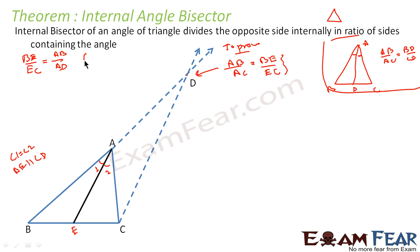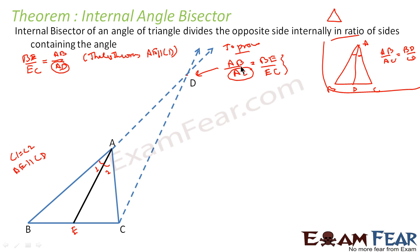We are supposed to prove that BE by EC is equal to AB by AC. So instead of AD, we need AC. If somehow we can prove that AD is equal to AC, the issue is solved. So let us see: can we prove AD is equal to AC?